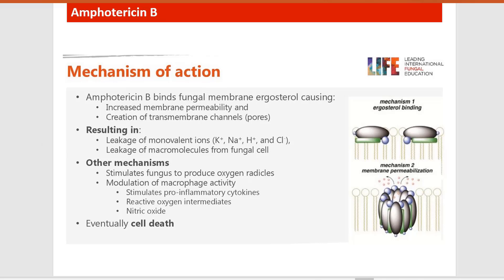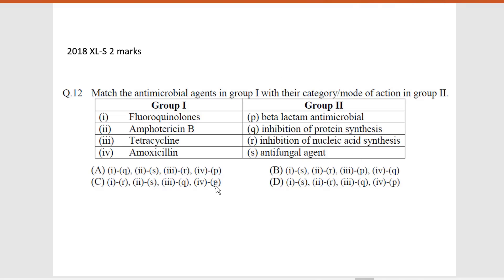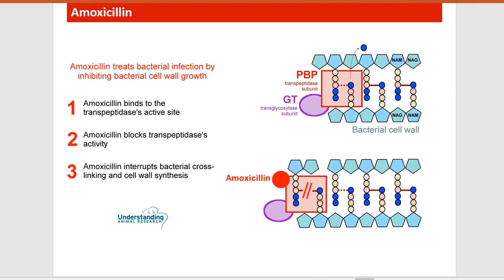Going back to the question: fluoroquinolones inhibit nucleic acid synthesis; amphotericin B acts on the fungal cell membrane and is an antifungal agent; tetracycline blocks translation or protein synthesis; and amoxicillin is a beta-lactam antibiotic — like penicillin, it has a beta-lactam ring that blocks cell wall synthesis by inhibiting transpeptidase activity in a competitive manner.